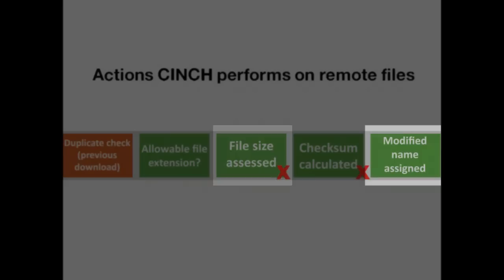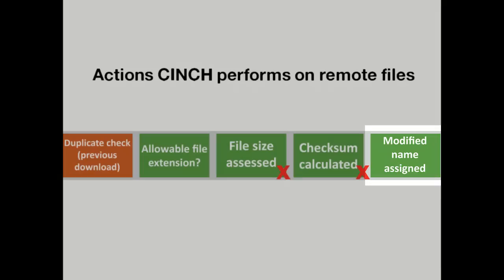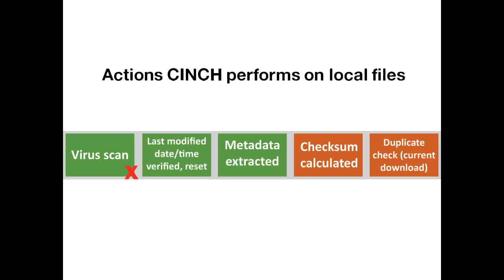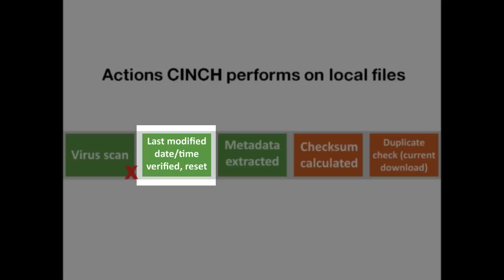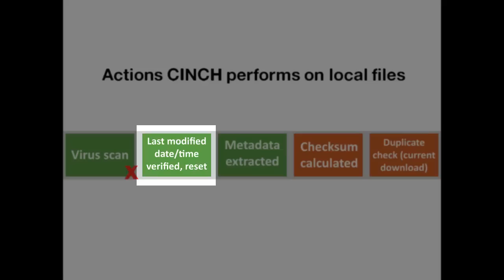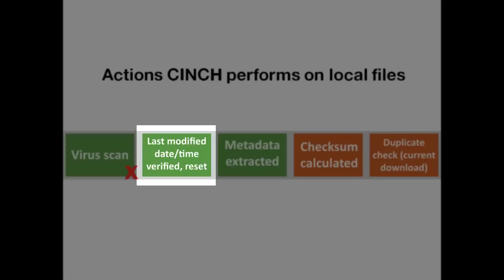Cinch also assigns a unique, modified file name to the remote file — I'll explain later how it chooses those names. Cinch then downloads your files. Once downloaded, last modified dates and times are verified against the information from before the files were downloaded. If the dates and times do not match, they are reset so that they do.